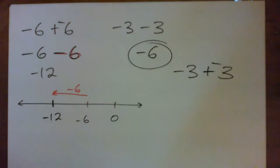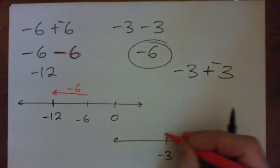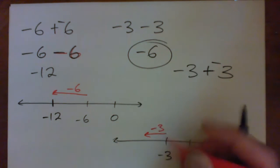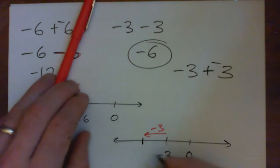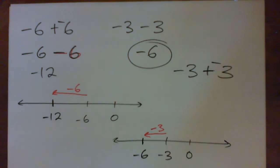Or I can think about my number line. I'm at negative three, I'm gonna go back three spots on the number line and that brings me to negative six on the number line.